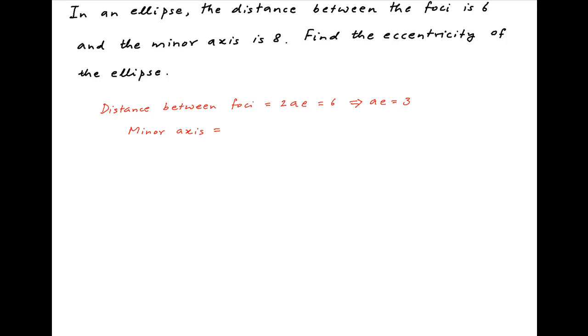Let's also denote the minor axis of the ellipse by 2b. This is given to be equal to 8. Therefore, the semi-minor axis b is equal to 4.